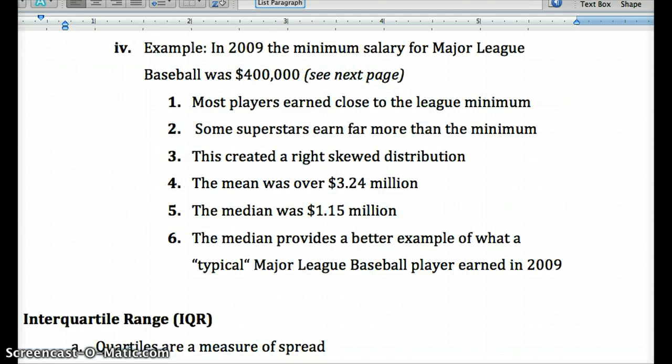So a good example of this is if we look at salaries for Major League Baseball players. In 2009, the minimum salary was $400,000, with most players earning close to that value. But superstars would earn far more than that. So that created a right skewed distribution, meaning there's some players that are earning far more.